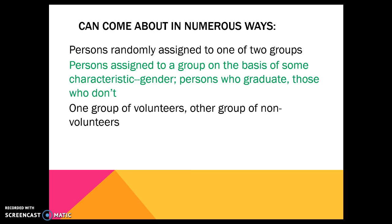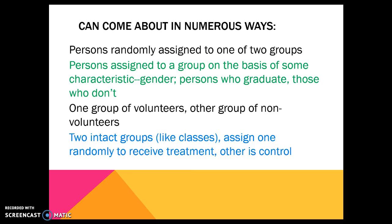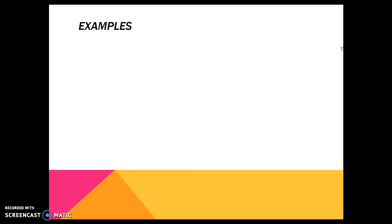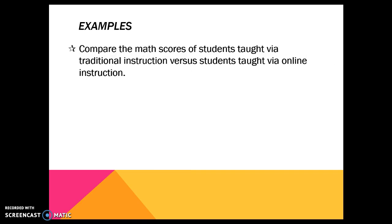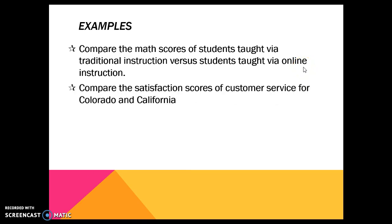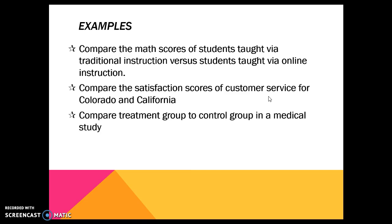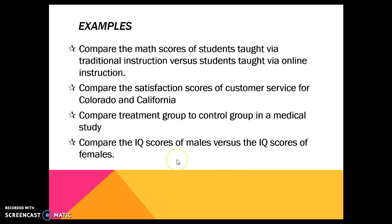We could do one group of volunteers and one group of non-volunteers, although doing research with non-volunteers is never a good idea. We could also have two intact groups — compare two of my classes and see if one is scoring higher. We could also do a treatment and a control, giving video support to one group and not the other. For example, comparing math scores for groups in traditional instruction versus online, comparing customer satisfaction for Colorado vs. California, comparing a treatment group to a control group, or comparing IQ of male and female.